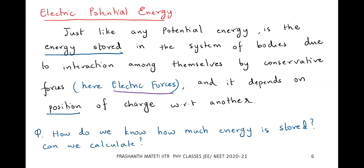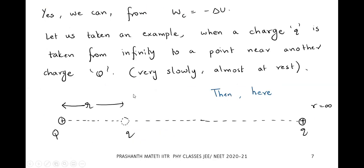We now know there is potential energy. But how much is stored? Can we calculate it? Yes, we can, because potential energy is related to force, and we can calculate the electric force using Coulomb's law. We can also calculate work done by the force, and that work converts into potential energy. The relation is: work done by conservative force equals minus delta U.